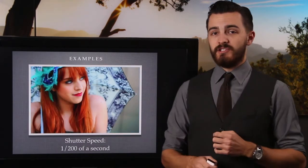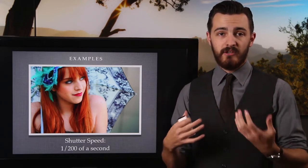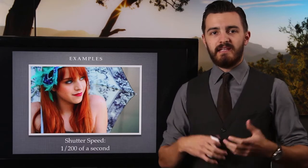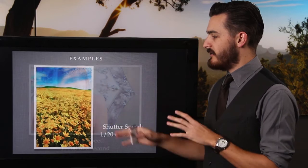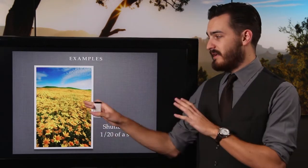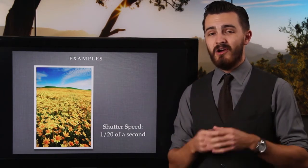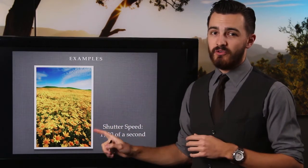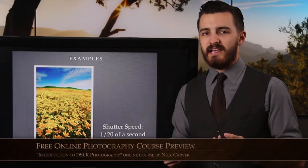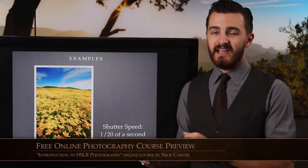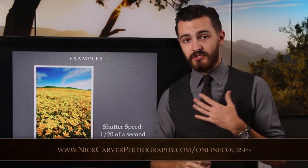At 1/200th of a second, my model isn't moving that much — she's sitting still and I'm hand-holding but pretty steady, so 1/200th is more than enough to freeze any little motions. On this landscape at 1/20th of a second, nothing is moving all that much. The only motion is from flowers moving in the breeze a little bit — not exactly a hummingbird's wings — so 1/20th was fast enough. I was on a tripod here so my motion wasn't a concern at all.